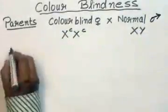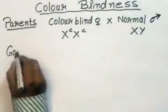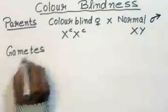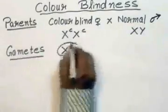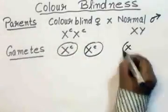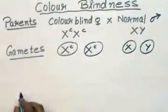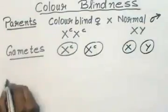Let us see gamete formation. Now let us see what happens in the case of offsprings.